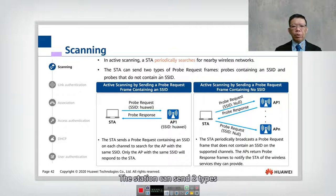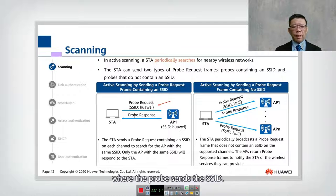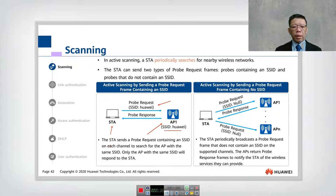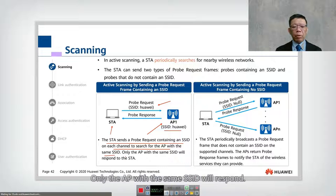The station can send two types of probe request frames: a probe containing an SSID, and a probe that does not contain an SSID. In the first scenario, the STA sends a probe with a known SSID — for example, 'Huawei'. Only the AP with the same SSID will respond to that probe request.